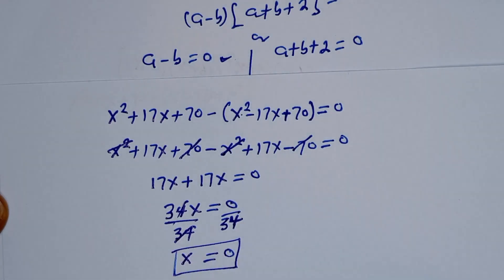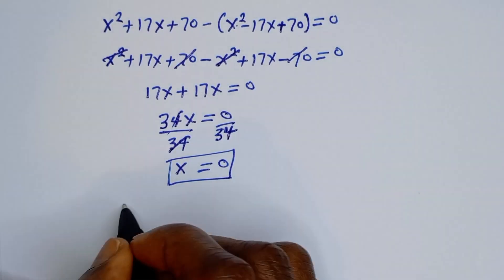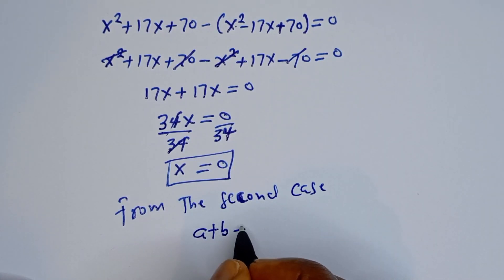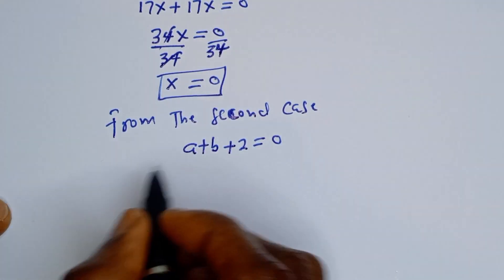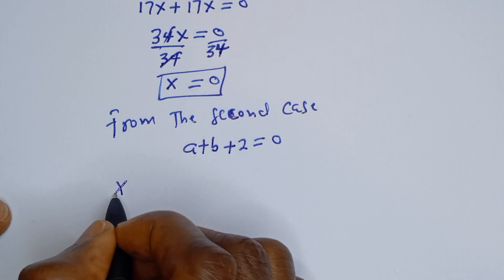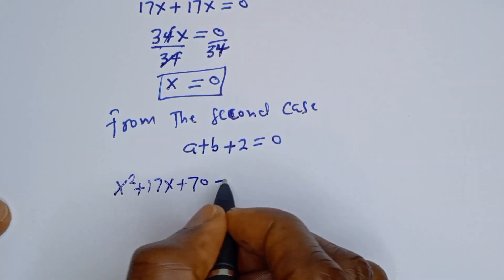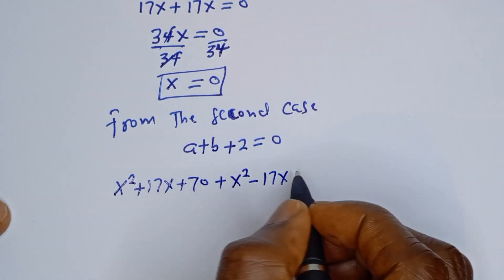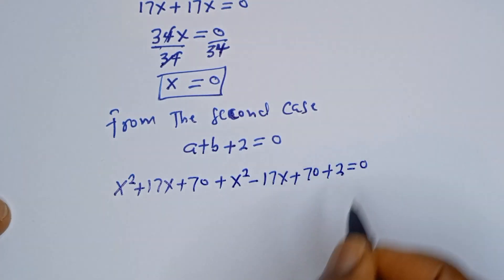This is the value of S from the first case. Now let's consider the second case: A plus B plus 2 equals 0. Substituting A equals S squared plus 17S plus 70 and B equals S squared minus 17S plus 70, we get S squared plus 17S plus 70 plus S squared minus 17S plus 70 plus 2 equals 0.